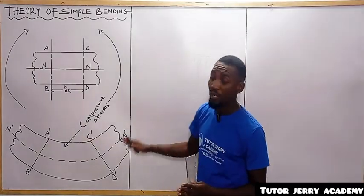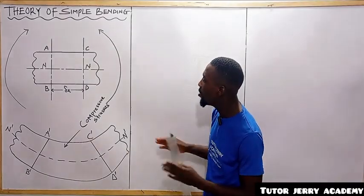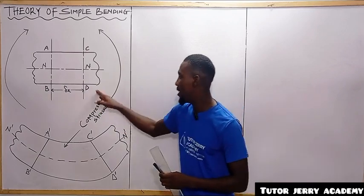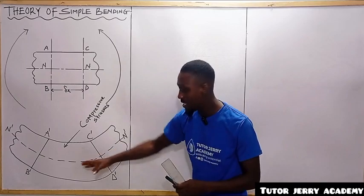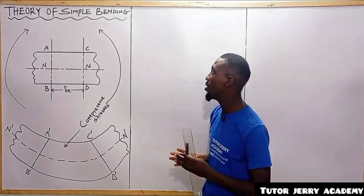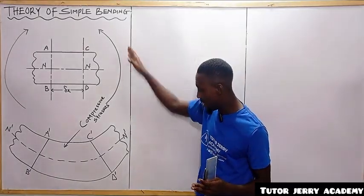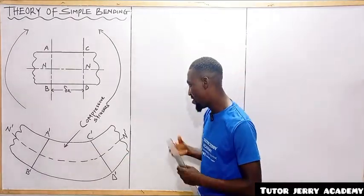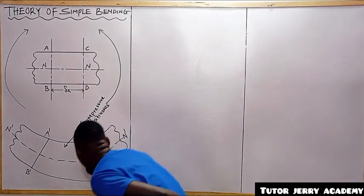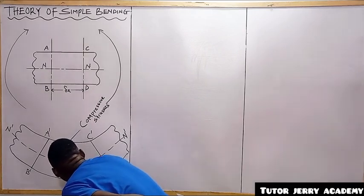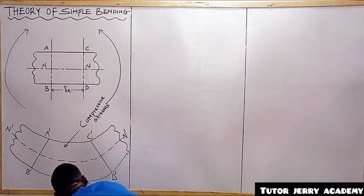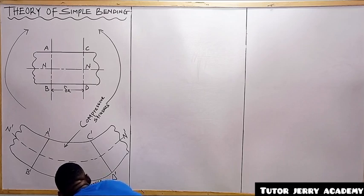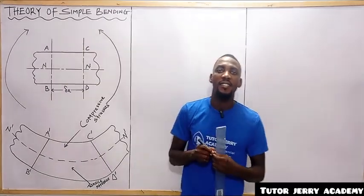Below the neutral layer, BD has been increased — that is, it has undergone elongation due to the action of bending. It has increased in length. So the bottom part is subjected to tensile stresses. This part is subjected to tensile stresses.